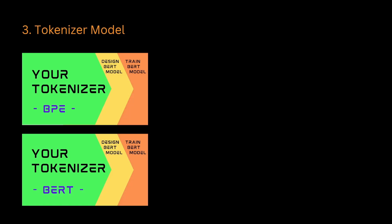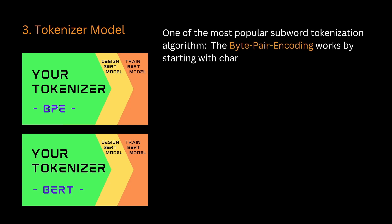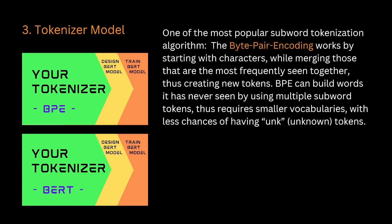I have two videos on my YouTube channel explaining in detail how two different tokenizer models work. The first is byte pair encoding, BPE — the most common and a really powerful tool. BPE works by starting from the single characters in a word, then analyzing and merging them together frequency-based, creating new tokens from the bottom up. The advantage BPE has: it can build words it has never seen by using multiple subword tokens. You need smaller vocabularies, and you have a good chance of having no unknown tokens. This is why it's such a great system.